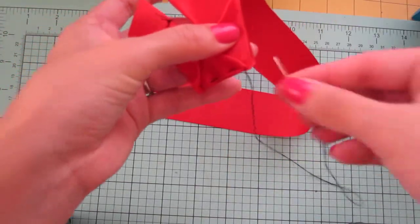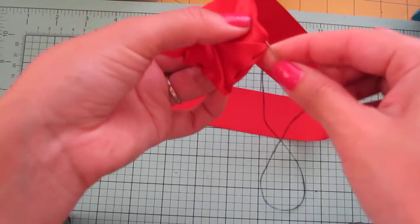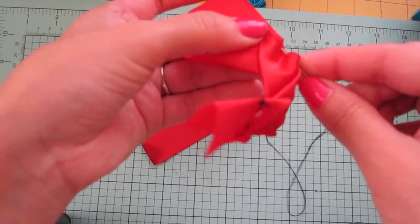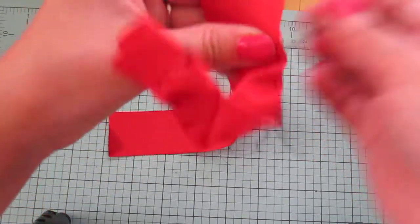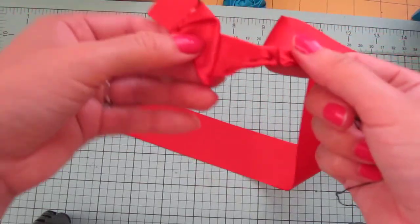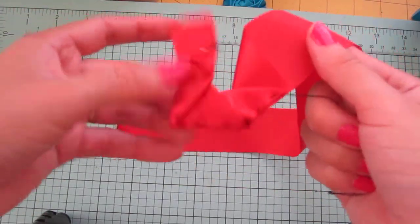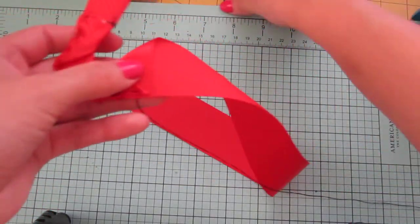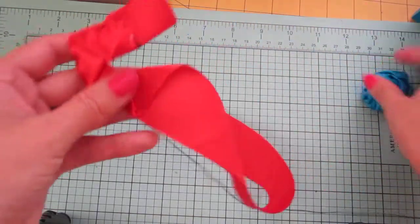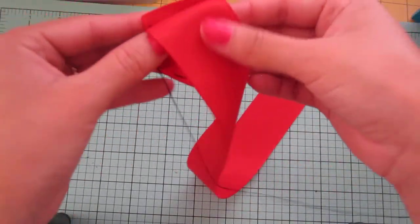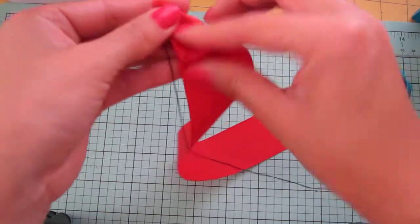And again, you're going to do a running stitch. It's going to look funky at first. Like this. It's okay. That's how mine's looking too. But it's going to turn out like a pretty rose. So again, fold it back. Forward.